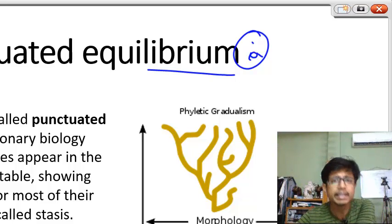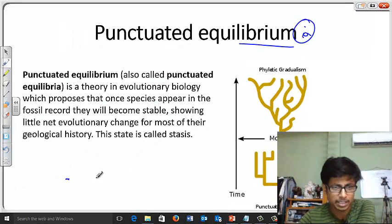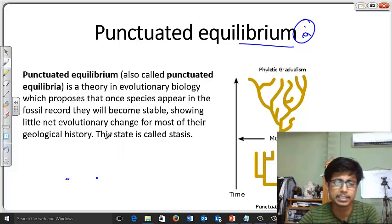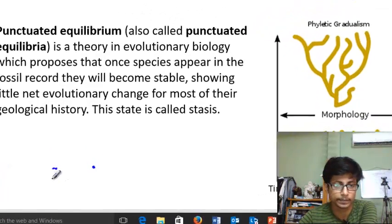There are two different types of models that we have nowadays for evolution. Two models supported by many different evidences, but none of them is established as fact because we still need to gather some more evidences for both of them.